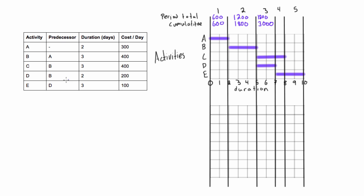In period four we have activities C and E, costing $400 plus $100 per day — $500 total for that one-day period. Adding to the cumulative gives us $3,500. In period five, only one activity is happening at $100 per day for two days, giving a period total of $200, finishing with a total cumulative cost of $3,700.